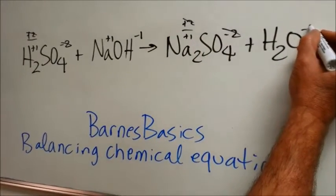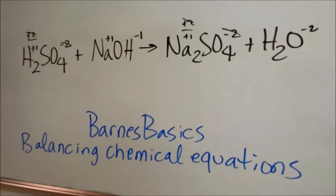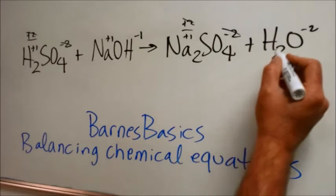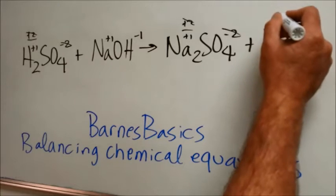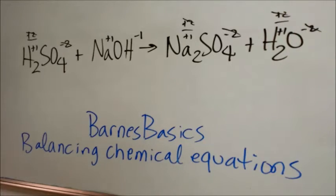Oxygen is always minus 2 except in peroxides where it's negative 1. Hydrogen is plus 1 in this case. 2 times plus 1 is plus 2. This is neutral.